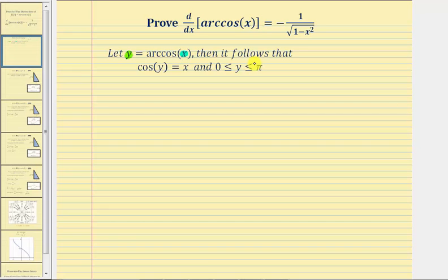Because we have cosine y equals x, if we want x over one, let's model the angle y using a triangle where we know that the cosine function value is equal to the ratio of the adjacent side to the hypotenuse.